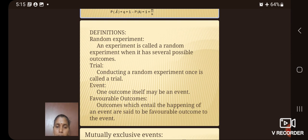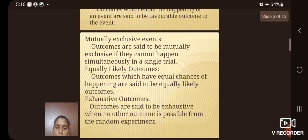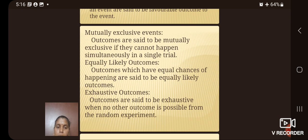Definitions. Now, let us see the general definitions in probability. A random experiment is called a random experiment when it has several possible outcomes. Trial: conducting a random experiment once is called a trial. Event: one outcome itself may be an event. Favorable outcomes: outcomes which entail the happening of an event are said to be the favorable outcome to the event.